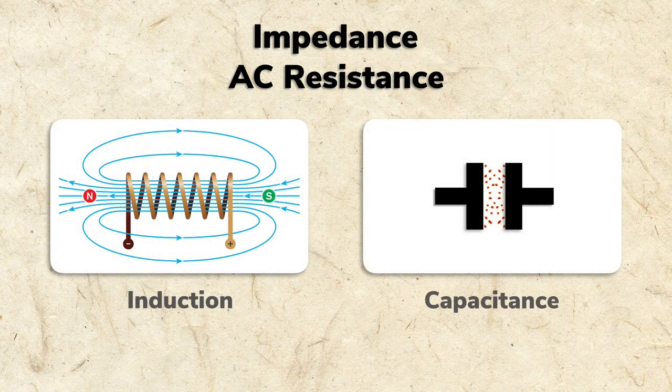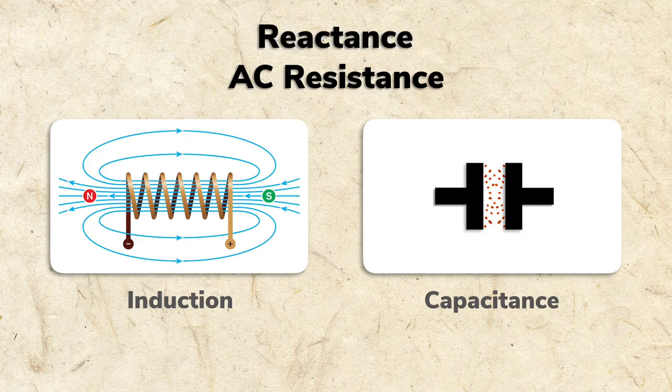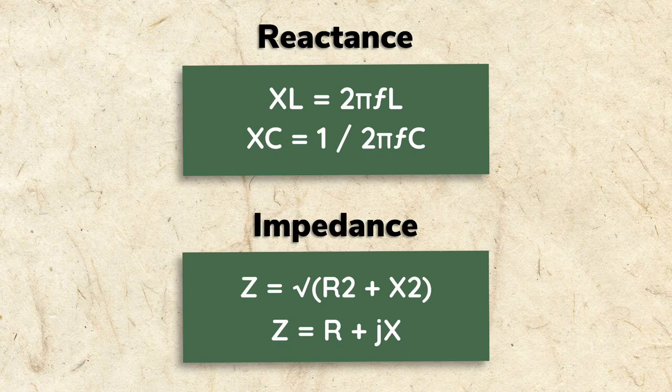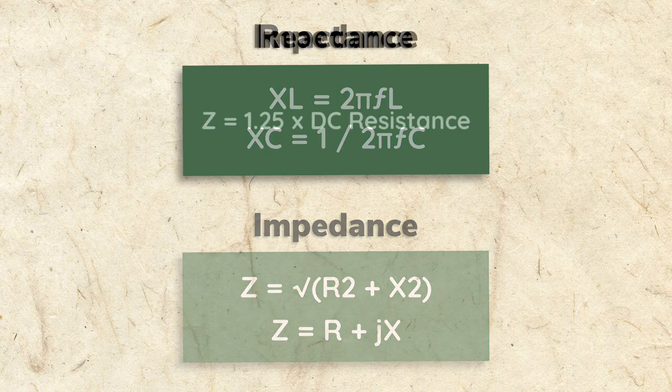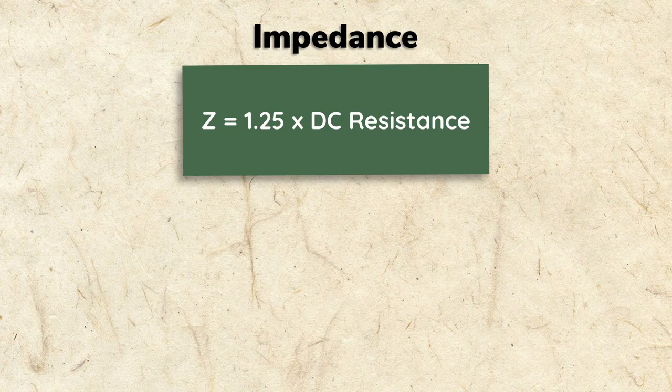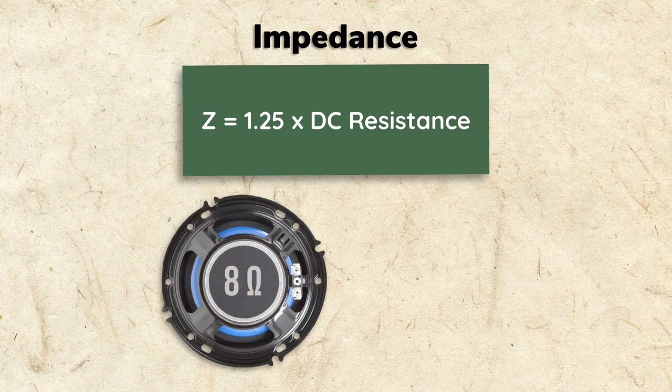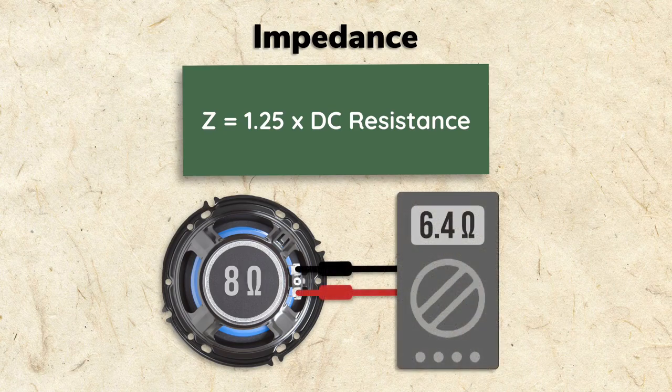This additional resistance to an AC signal is called reactance. Calculating reactance and impedance requires formulas that are beyond the scope of this series, but for now you can think of impedance as being roughly 1.25 times an equivalent DC resistance. So a speaker rated for 8 ohms impedance will measure about 6.4 ohms resistance.